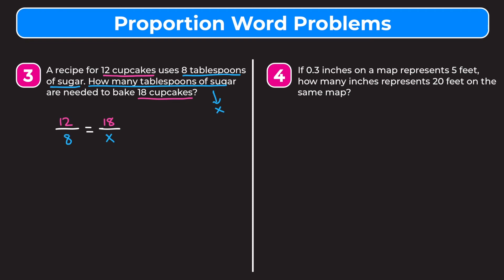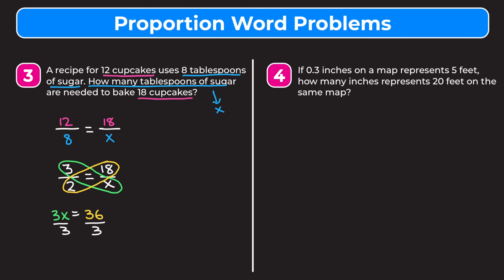We simplify 12 over 8 by dividing top and bottom by four, giving 3 over 2, equal to 18 over x. Cross multiplying: 3 times x equals 2 times 18, so 3x = 36. Dividing both sides by 3, the threes cancel and we get x = 12. We need 12 tablespoons of sugar to bake 18 cupcakes.